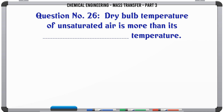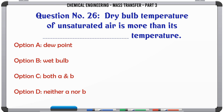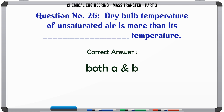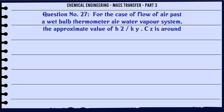Dry bulb temperature of unsaturated air is more than its: A) dew point temperature, B) wet bulb temperature, C) both A and B, D) neither A nor B. The correct answer is: both A and B.